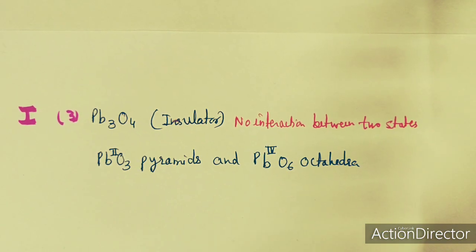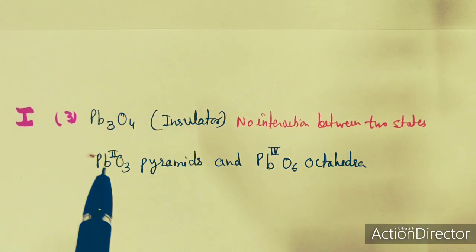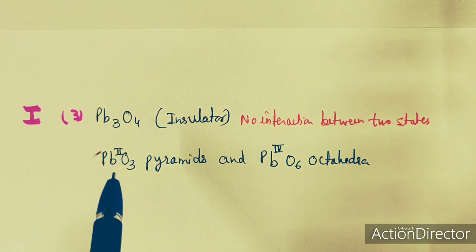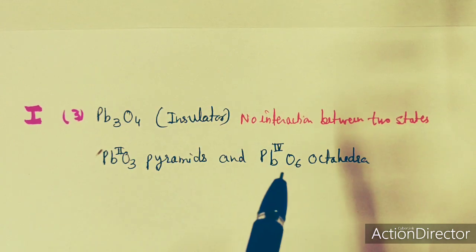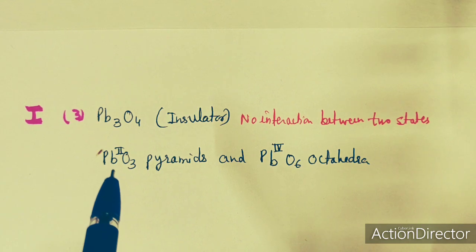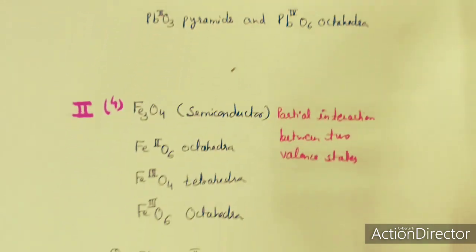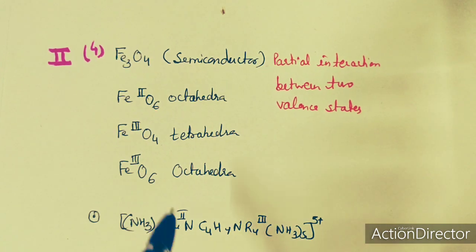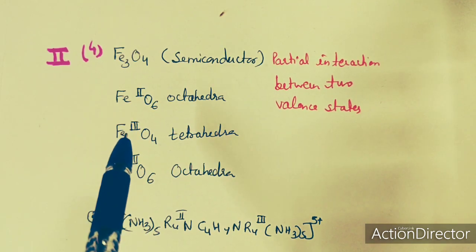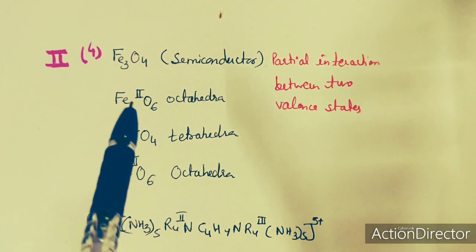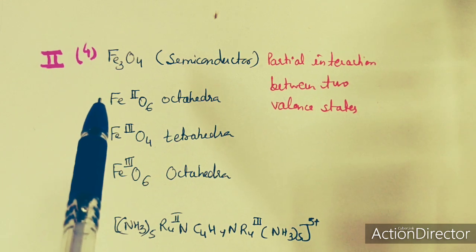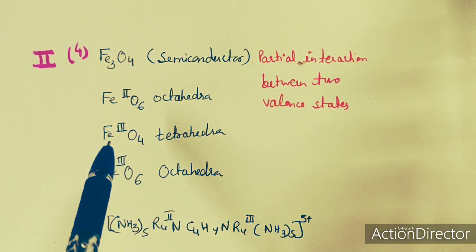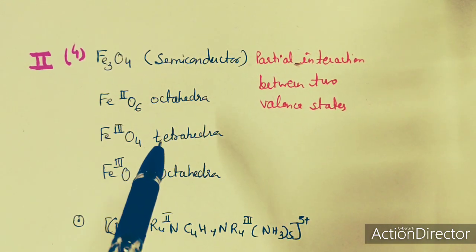The intervalence compounds can be classified into three groups. Class one: no interaction between the two states — like PbO4, which acts as an insulator having Pb2+ and Pb4+ with no direct interaction between these two states, though electron transfer from Pb2+ to Pb4+ does occur. Class two: partial interaction between the two valence states through bridging ligands — like Fe3O4, where there are two oxidation states Fe2+ and Fe3+, interaction takes place through the oxide ligand, and electron transfers from Fe2+ to Fe3+ so that it gets oxidized and Fe3+ gets reduced.